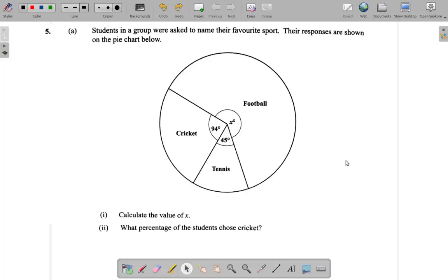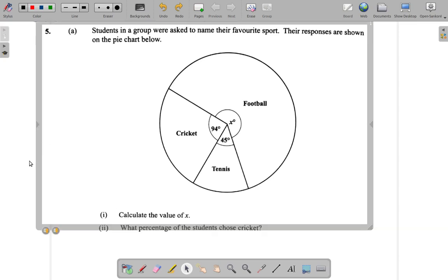Question 5, part A. Students in a group were asked to name their favorite sport. The responses are shown on the pie chart below. So, calculate the value of X. Okay.